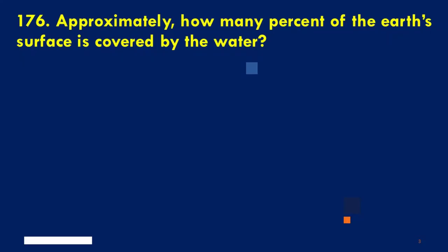Approximately, how many percent of the Earth's surface is covered by water? A. 50%, B. 85%, C. 71%, D. 60%. The correct answer is C, 71%.